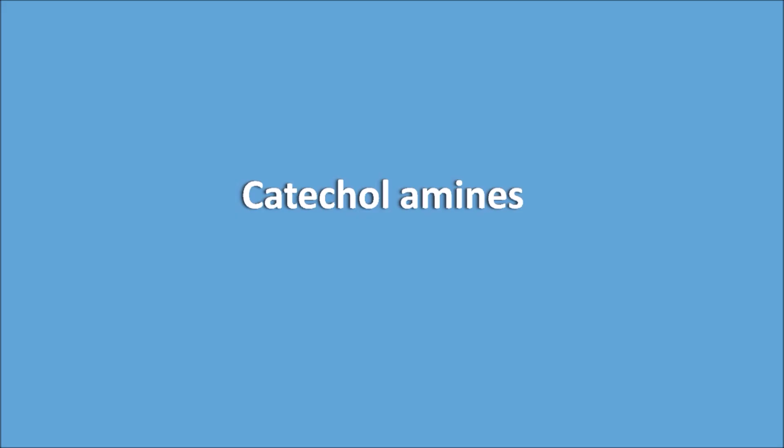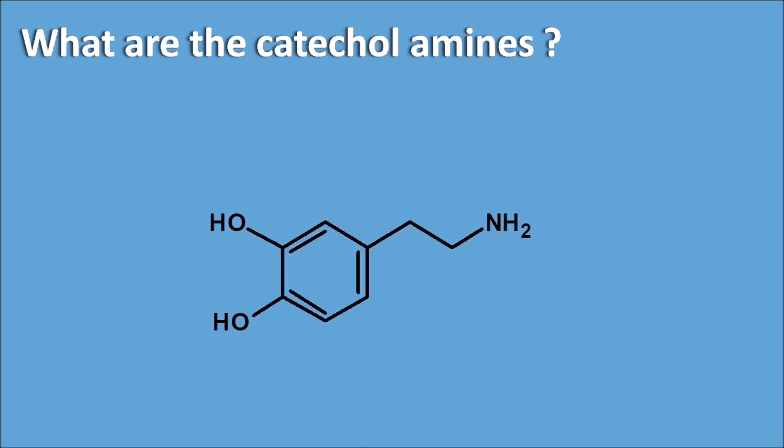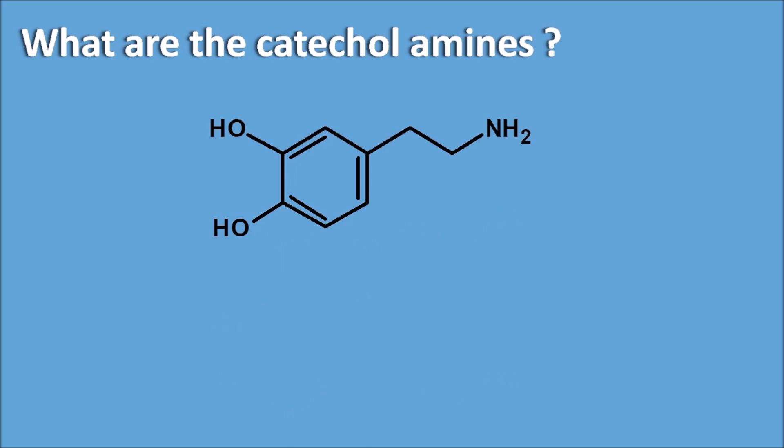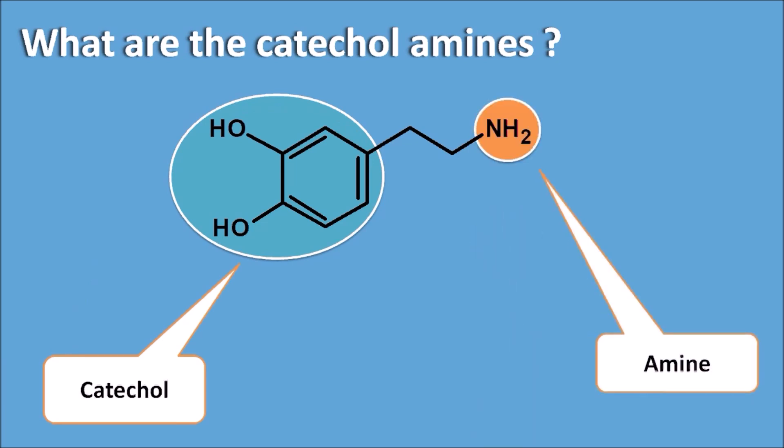In this video, let us see the catecholamines and their chemical nature. Catecholamines are compounds having a common structure consisting of two parts: the catechol group and the amine group — that is why they are called catecholamines.